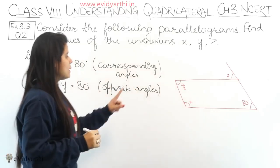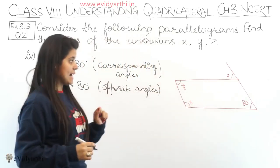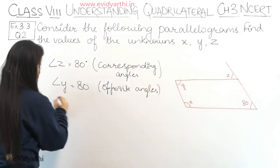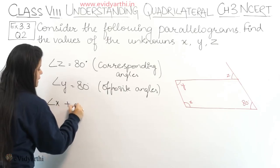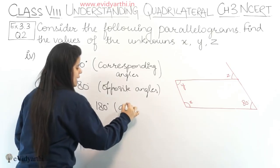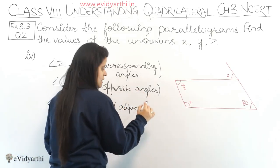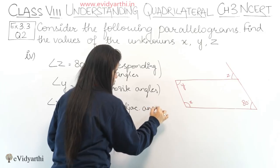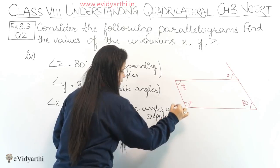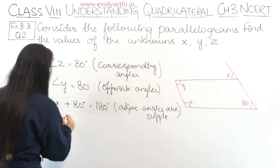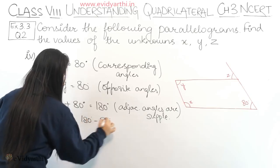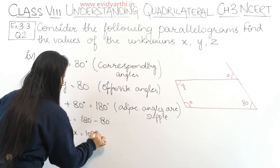Now we have z and y. For x: angle x and 80° are adjacent angles. So x + 80° = 180°, because adjacent angles of a parallelogram are supplementary.